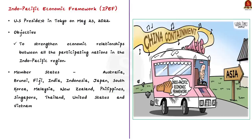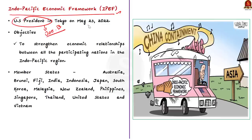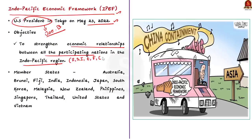The Indo-Pacific Economic Framework — IPEF — was launched by US President Joe Biden in Tokyo in May 2022. The IPEF seeks to strengthen economic relations between all participating nations by enhancing resilience, sustainability, inclusiveness, economic growth, fair treatment, and competitive spirit in the Indo-Pacific region. It also aims to provide a US-led alternative to China's economic footprint in the region. IPEF has 14 member states representing 40% of world GDP.